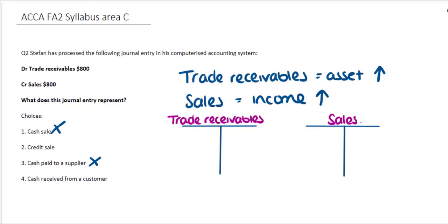If we make a sale, we've increased our income — income goes on the credit side. If it's a credit sale, the other side goes to Trade Receivables until that customer pays, so it would be credit Sales and debit Receivables. If it was cash received from a customer, we would debit Bank and credit Trade Receivables — so it can't be that option. The correct answer must be a credit sale.